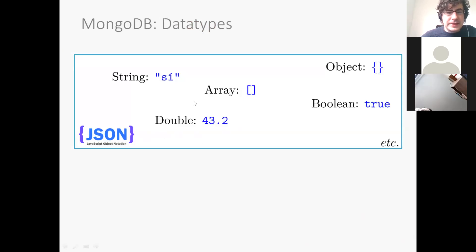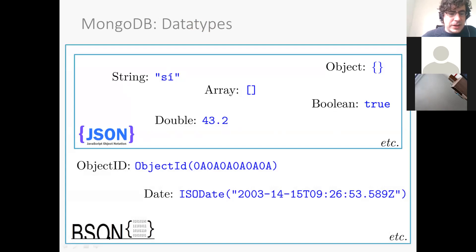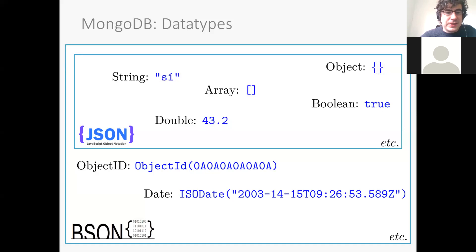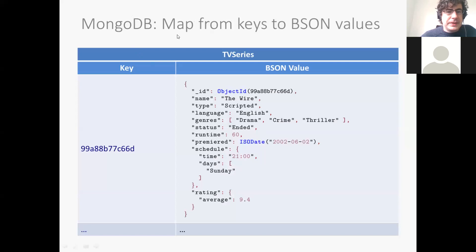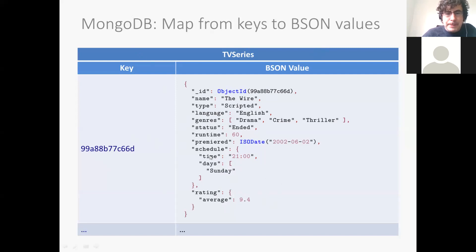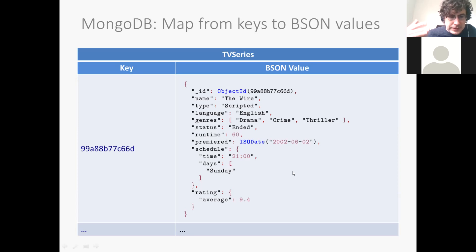For our purposes, we'll essentially consider JSON examples. MongoDB maps from keys to these binary JSON documents, where the key is also represented as the ObjectID in the document and the value is just a JSON document. Interestingly, MongoDB also allows us to query according to other elements of the document — for example, finding TV series whose status is ended, or TV series with a runtime greater than 60 minutes. We'll see what sorts of queries we can do and look at some concrete examples in this class.